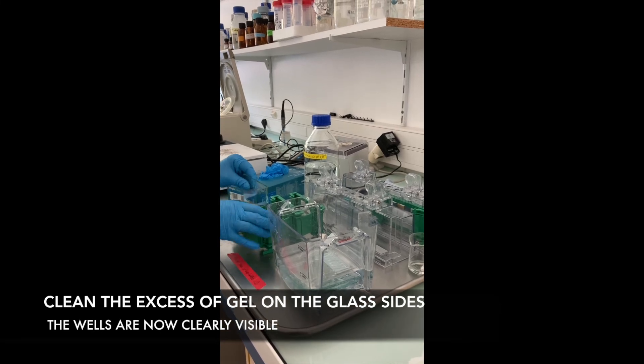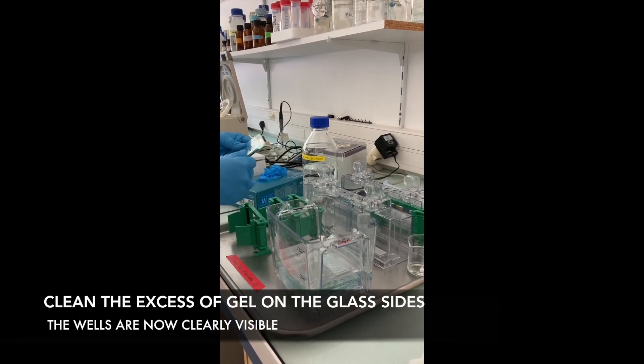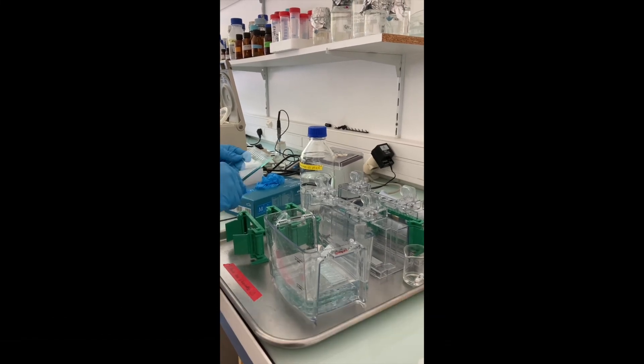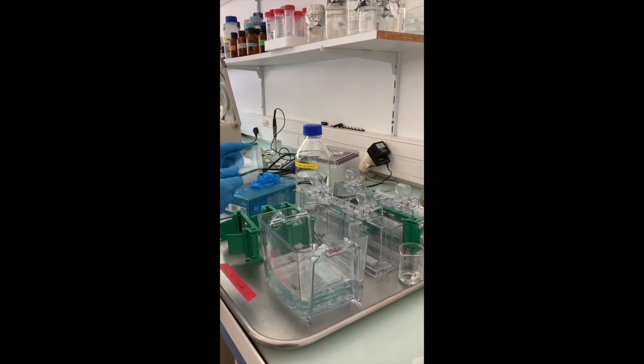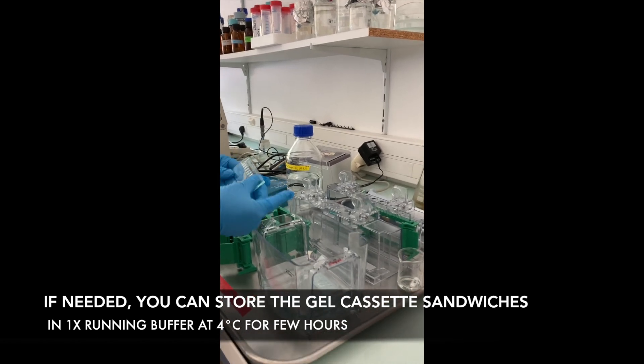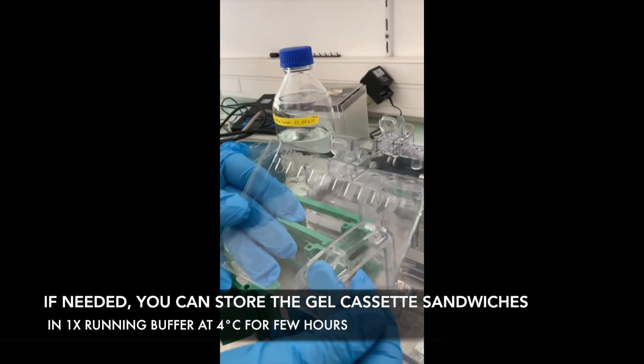Remove excess gel on the glass sides. You can now store your gel cassette sandwiches in 1x running buffer at 4 degrees for a few hours before the electrophoresis. Here you can easily see the wells.